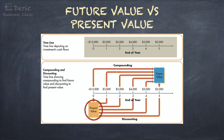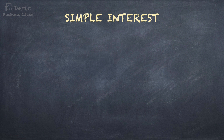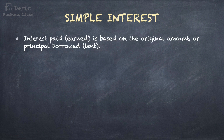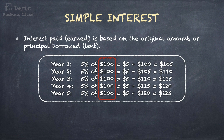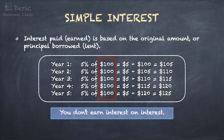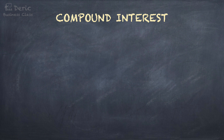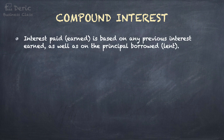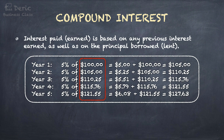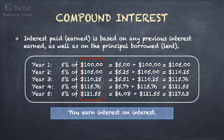There are two types of interest. First is simple interest — interest paid or earned is based on the original amount, or principal borrowed or lent. As shown in the table, every year the interest is calculated based on $100, which is the original principal, so you don't earn interest on interest. The second type is compound interest — interest paid or earned is based on any previous interest earned, as well as on the principal borrowed or lent. As shown in the table, every year the interest is calculated based on the previous year's total balance. That's why the interest payment gets higher and higher — you earn interest on interest. For the following questions, we will only apply compound interest.